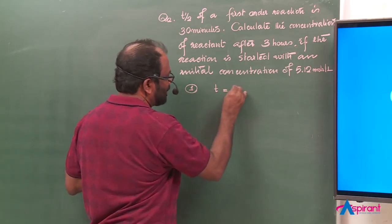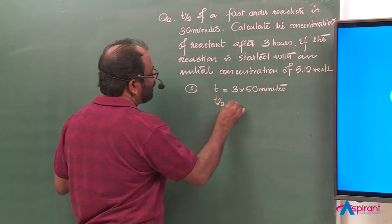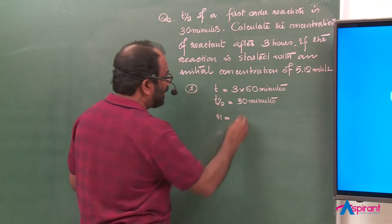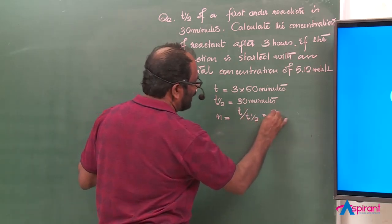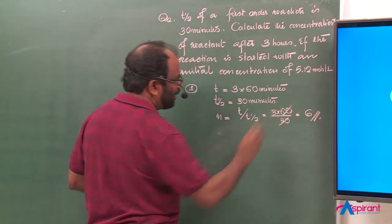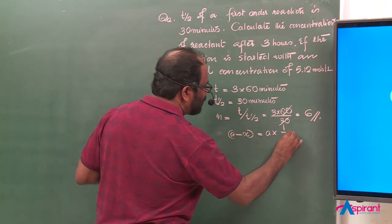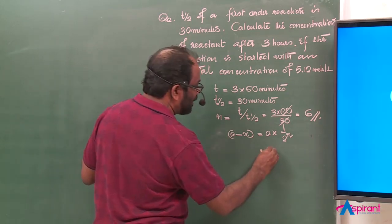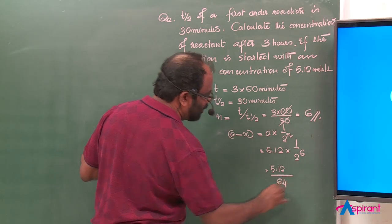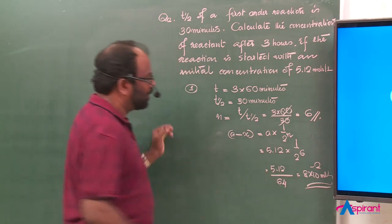Total time is 3 hours, which equals 3 times 60 equals 180 minutes. Half-life period is 30 minutes. Therefore, number of half-lives N equals total time divided by T-half, that is 180 divided by 30, equals 6. Final concentration (A minus X) equals initial concentration A times (1/2) raised to N, which equals 5.12 times (1/2) raised to 6, that is 5.12 divided by 64, which equals 8 times 10 raised to minus 2 moles per liter, or 0.08 moles per liter.